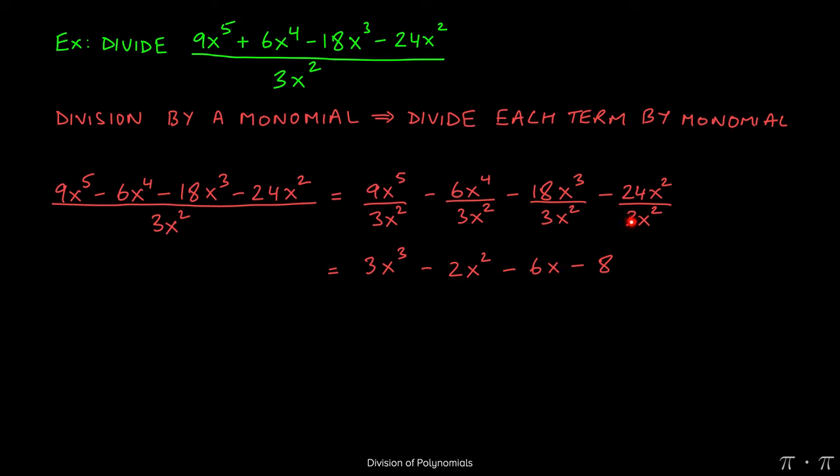And then finally, 24 divided by 3 will give 8. x squared and x squared on the top and bottom will cancel each other out.